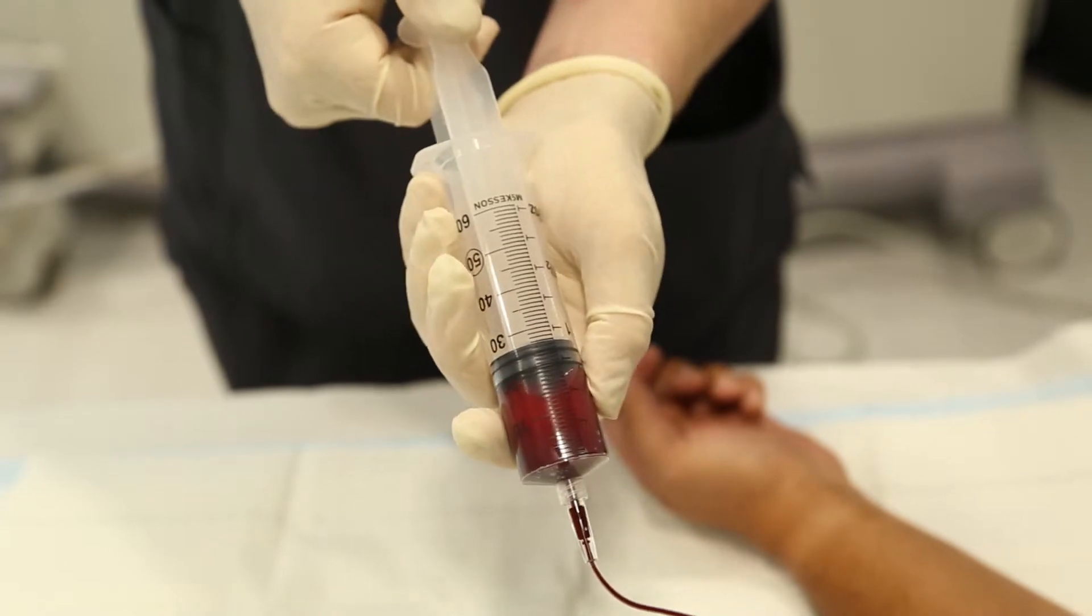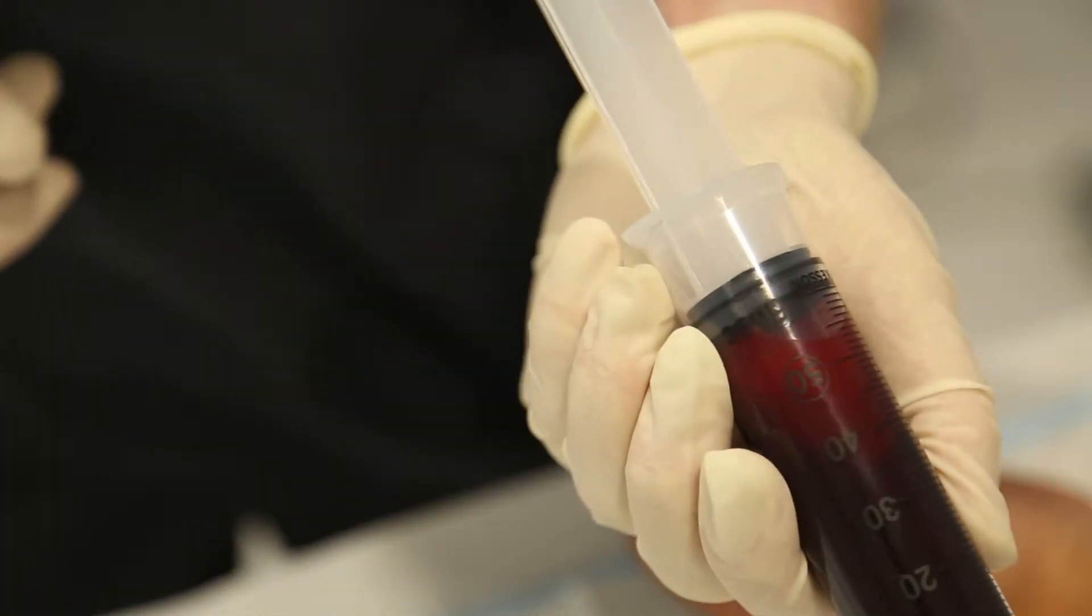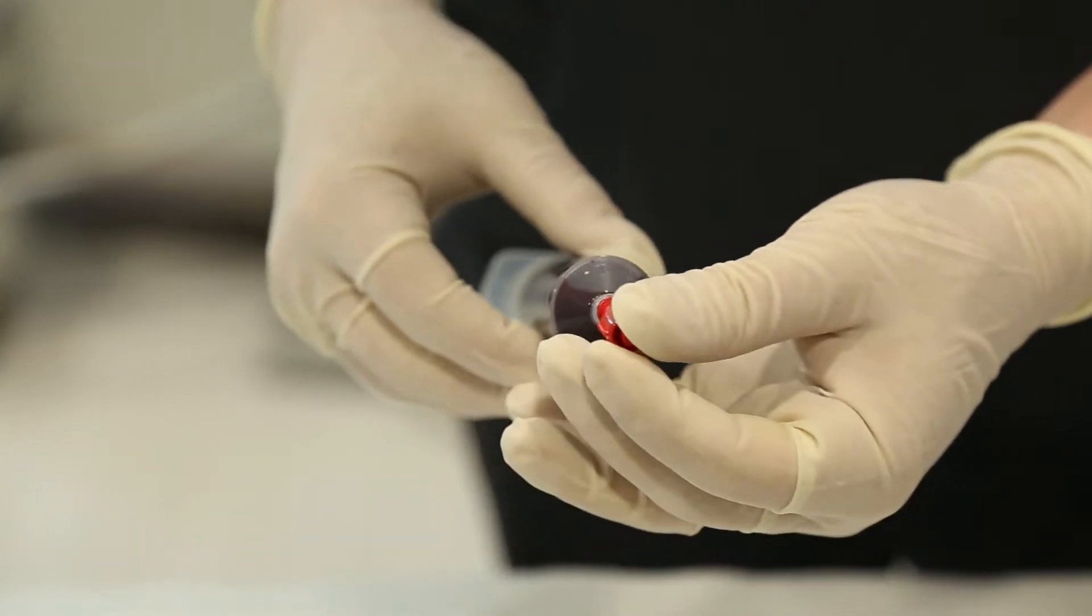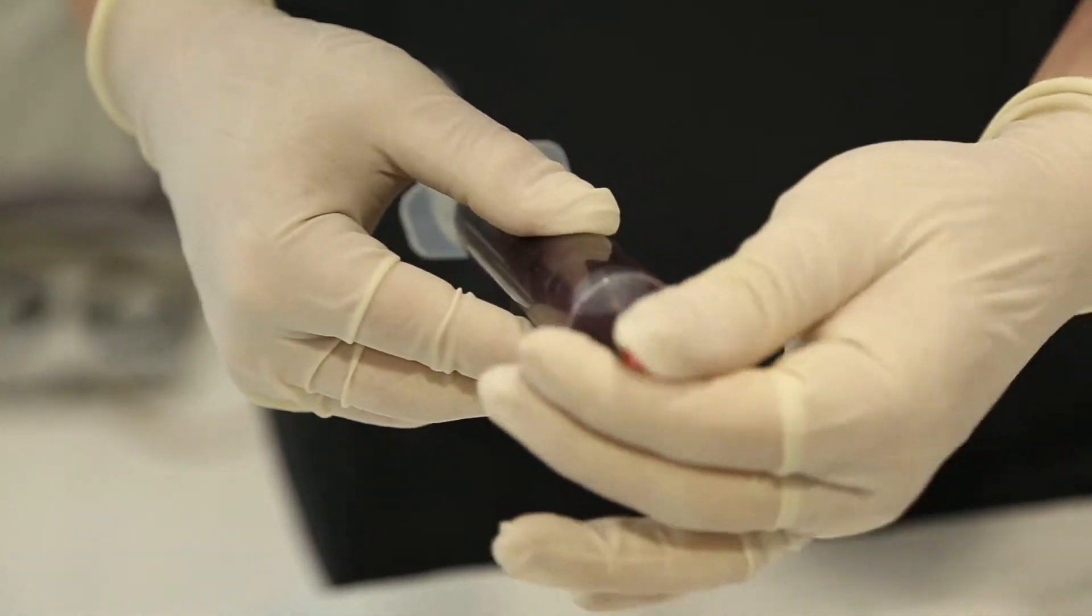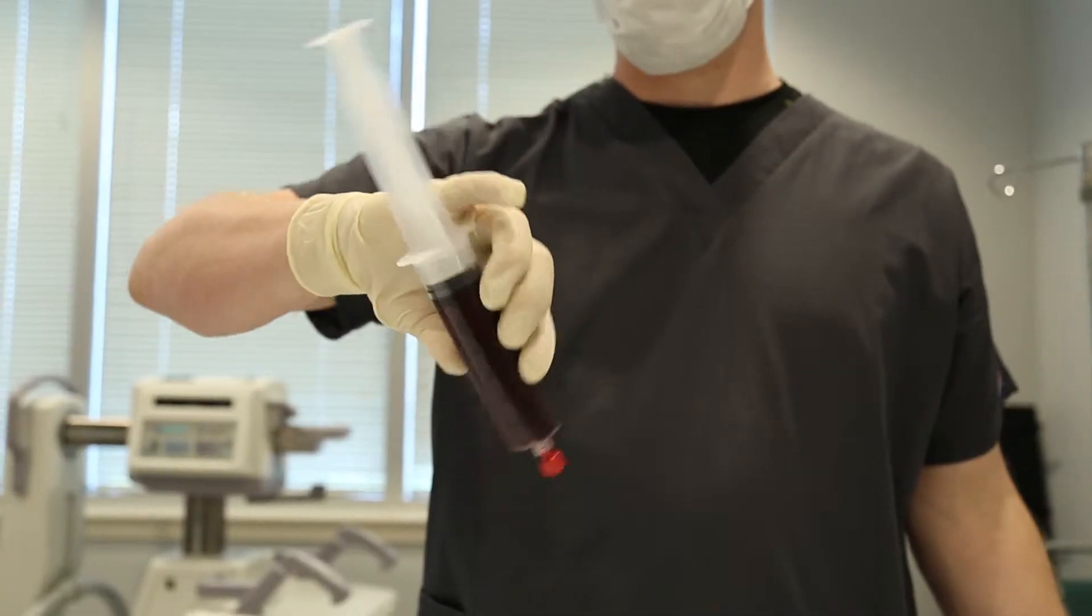Draw whole blood from the patient filling the syringe to a maximum of 60 ml. Once the blood is drawn, detach the tube and ensure the anticoagulant mixes throughout the blood sample.